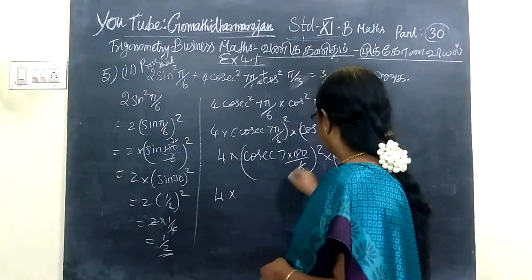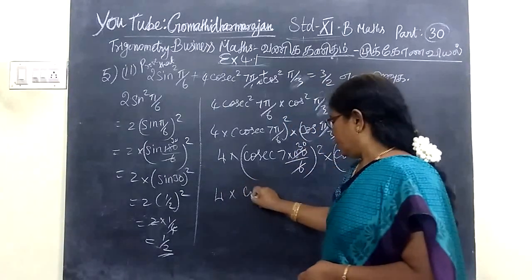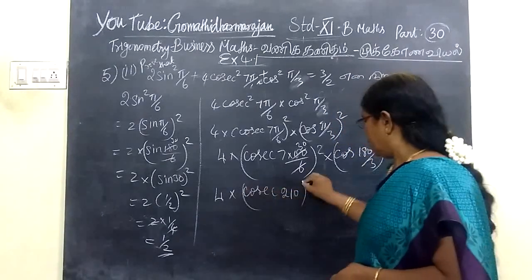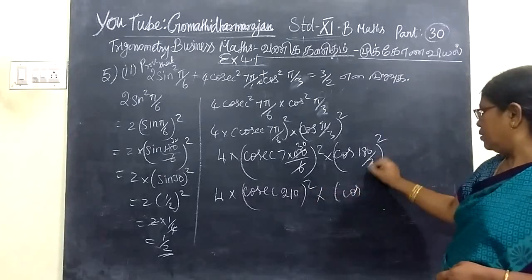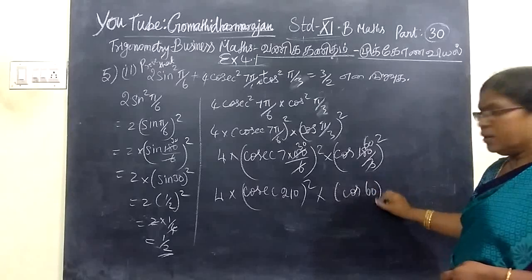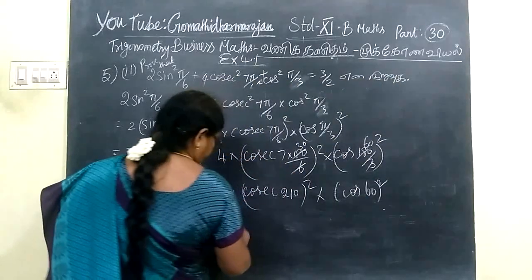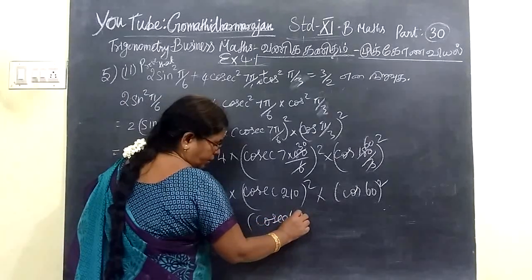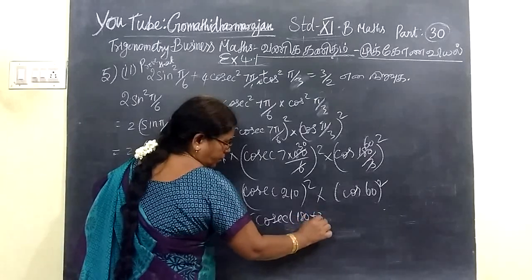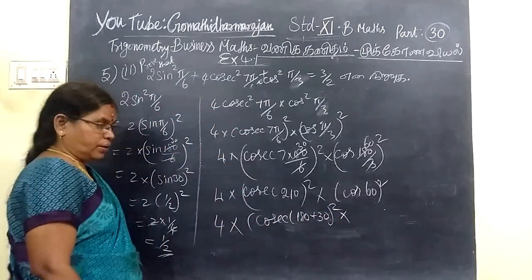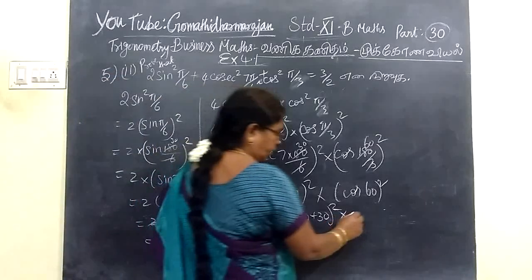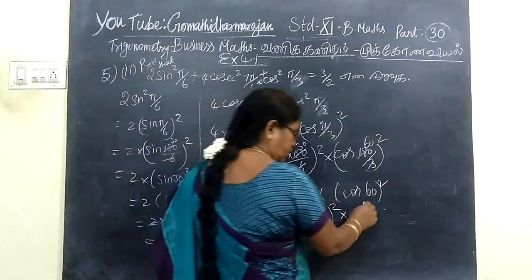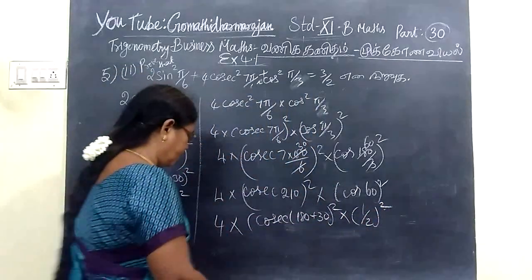You can cancel: 180 plus 30 gives 210. So sin(210°) — and cos(60°). Cos 60° is root 3 by 2. Then cos 60° is 1/2. So 4 into sin²(210°).